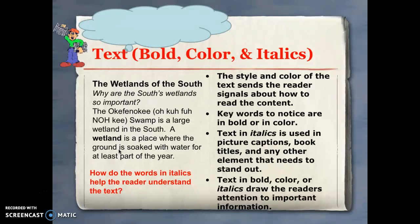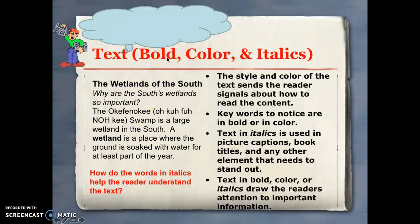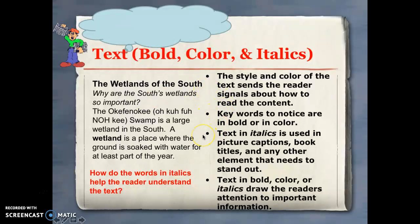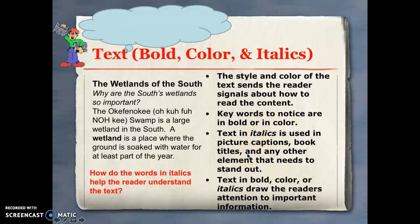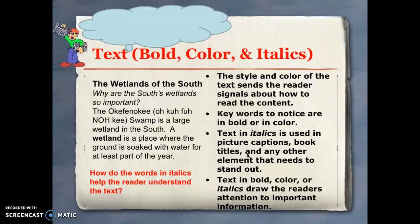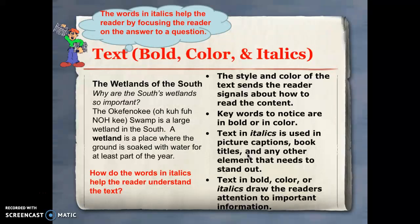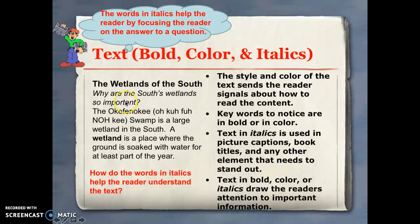Different types of text formatting are common text features. We often see texts that are in bold — meaning bigger, brighter print — color, and italics. Italics is text that looks slanted or angled. The style and color of these texts draw our eyes to important words, helping them stand out and drawing the reader's attention to important information. Italics can also help the reader by focusing on an answer to a question, such as 'Why are the South's wetlands so important?' — focusing your attention on that question before you read the paragraph.